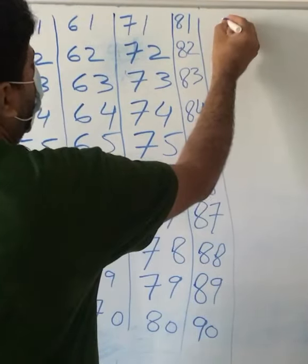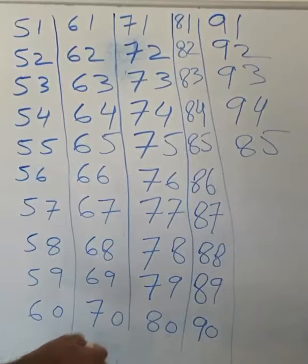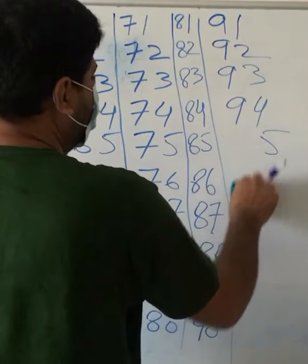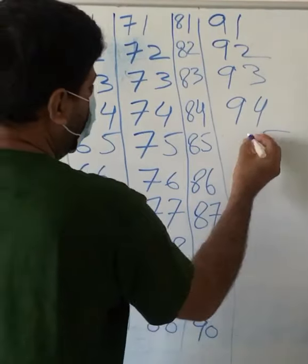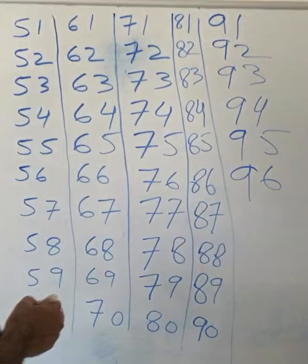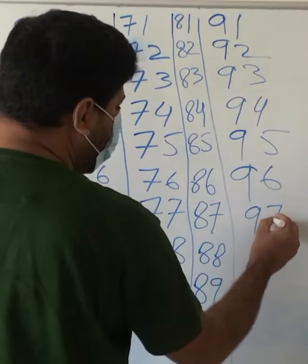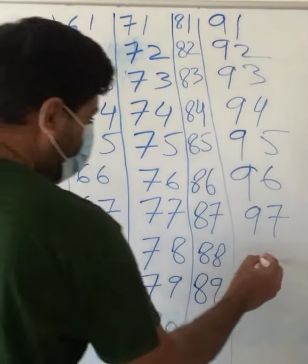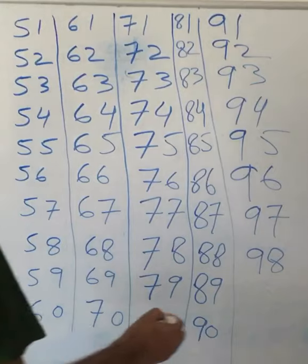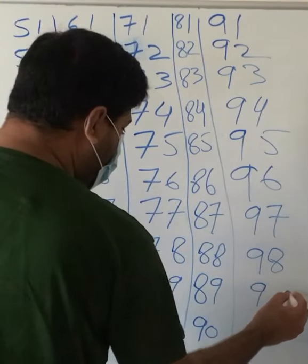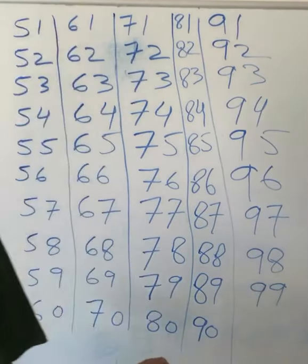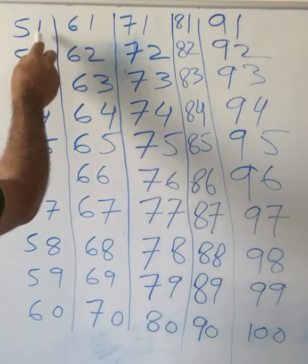92, 92, 93, 93, 94, 94, 95, 95, 96, 96, 97, 97, 98, 98, 99, 99, 100. Okay, we'll repeat again.